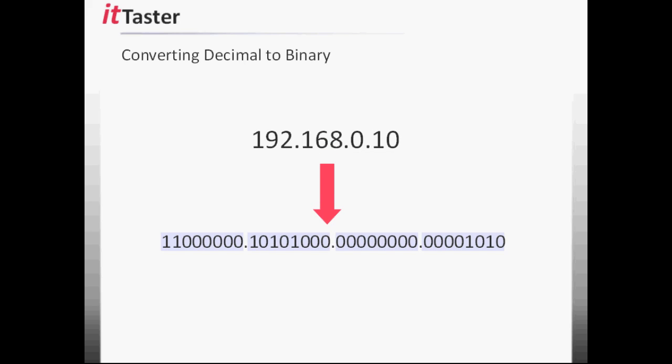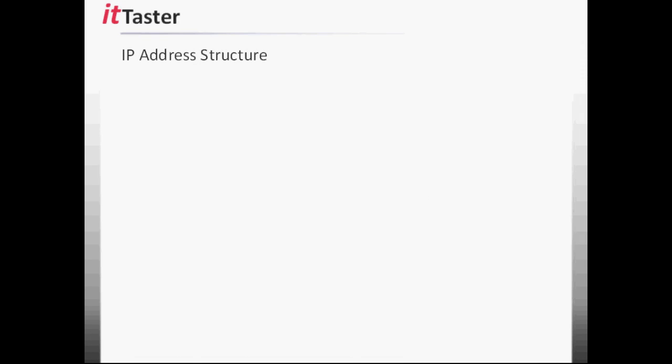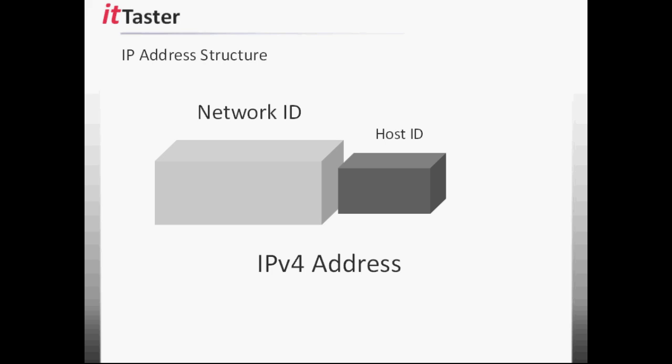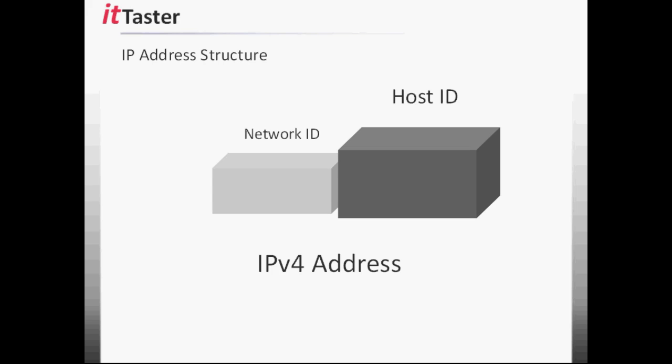And we have converted the IP address from dotted decimal form into binary. This is a really useful skill and one that you will need as a network professional and also if you plan to take network certifications. An IP address is made up of two parts: the network ID and the host ID. These two important pieces of information enable us to identify a network device. The network ID identifies the IP network the device belongs to, and the host ID identifies the device itself.